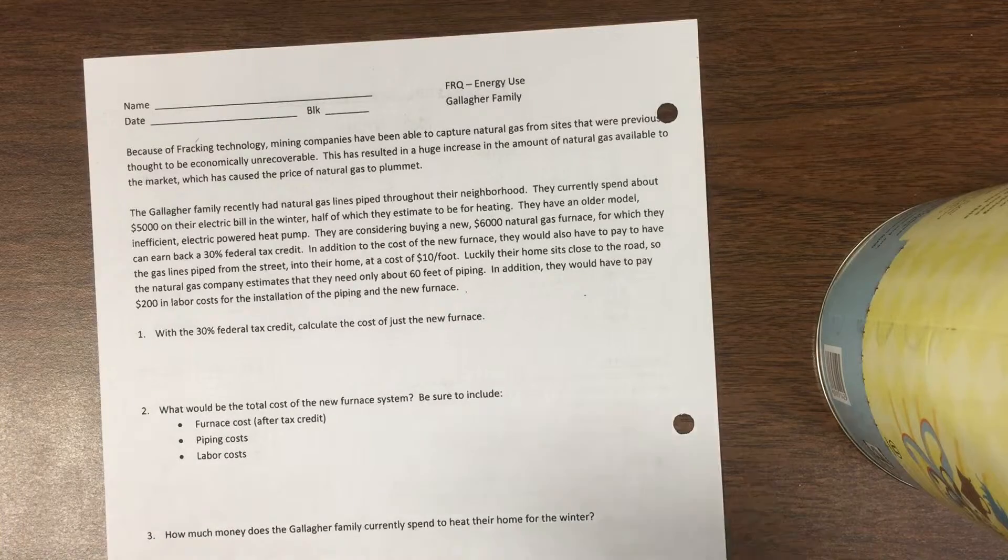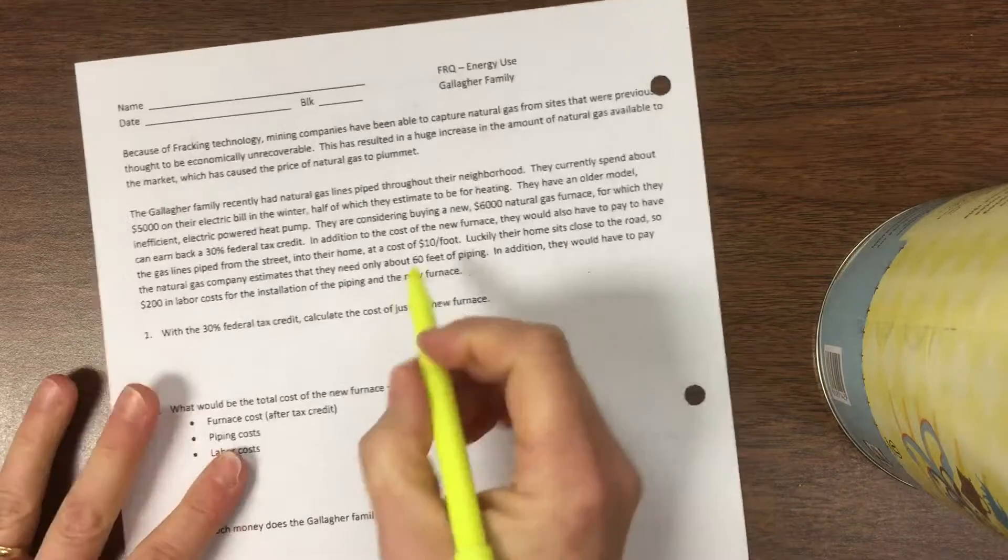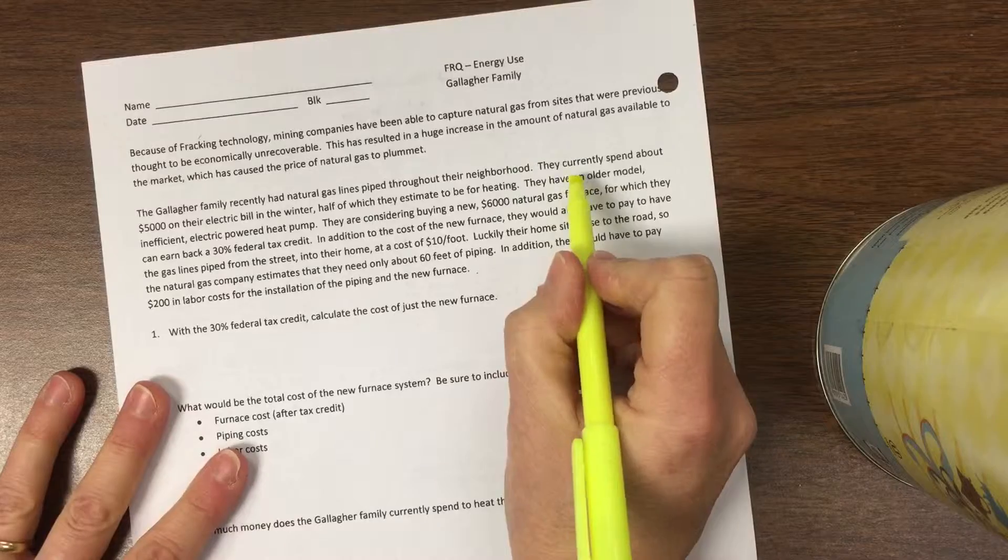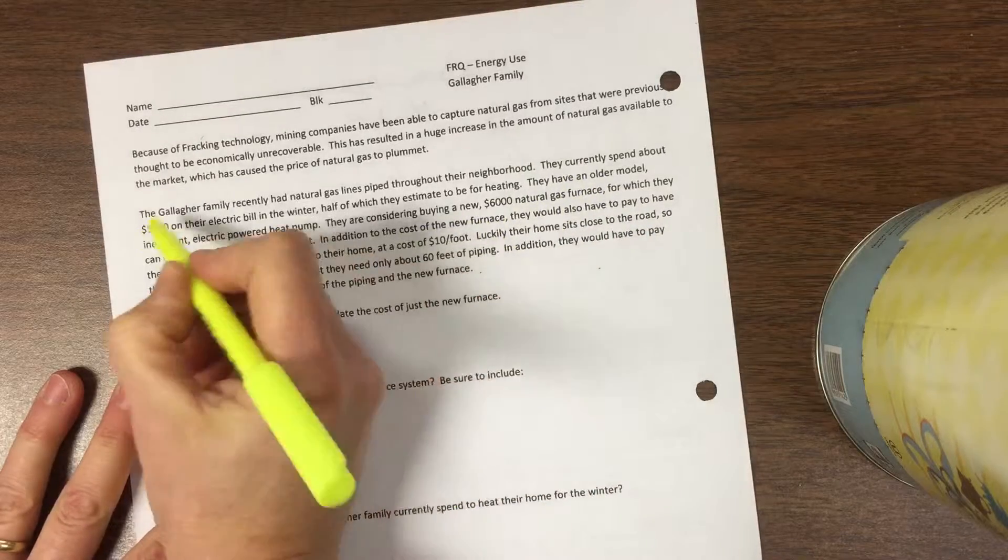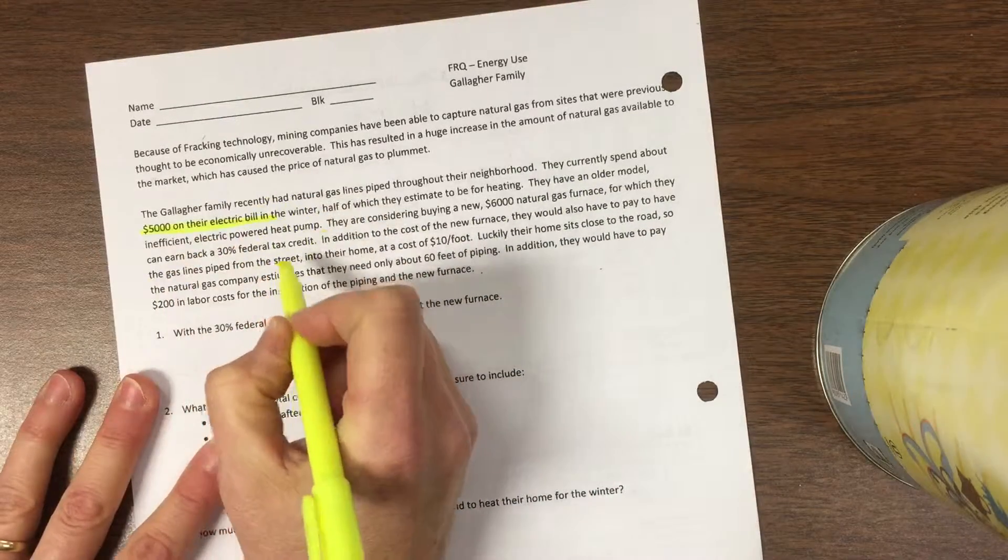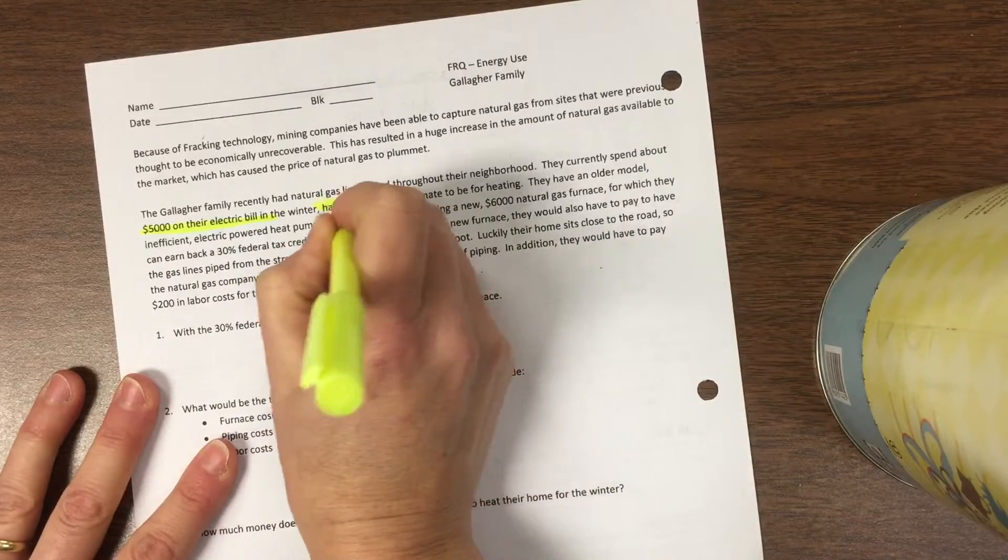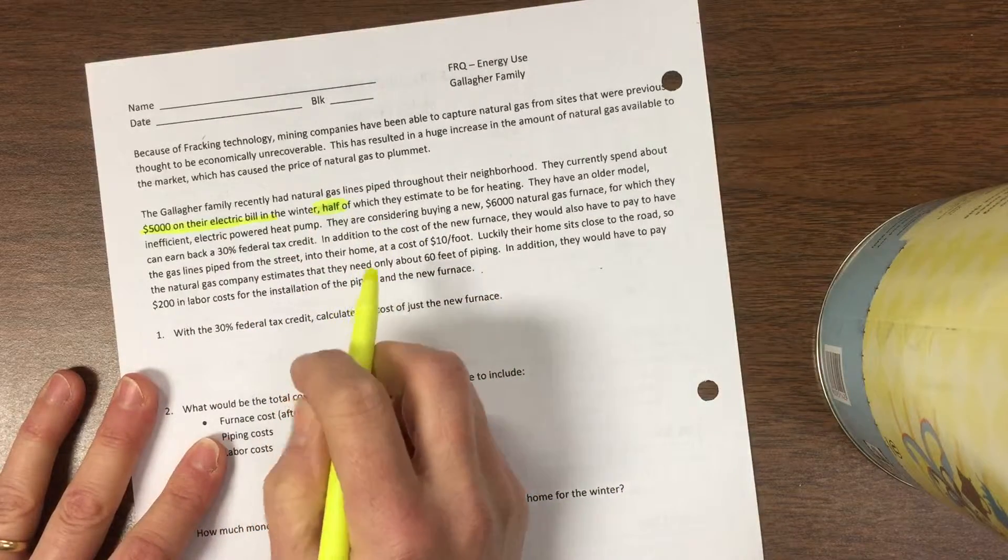Okay peeps, let me explain how to do this problem. The Gallagher family spends $5,000 on their electric bill in the winter, half of which is for heat.